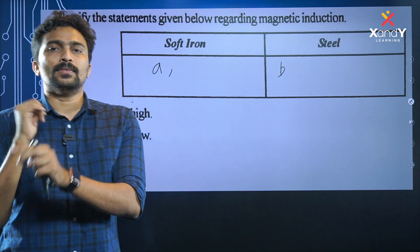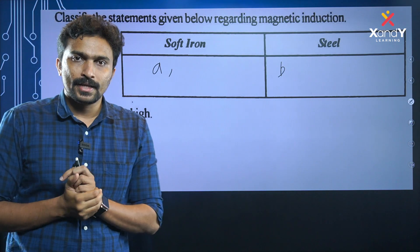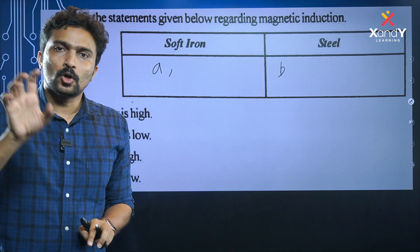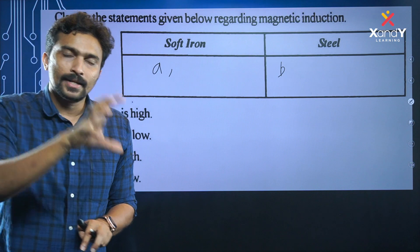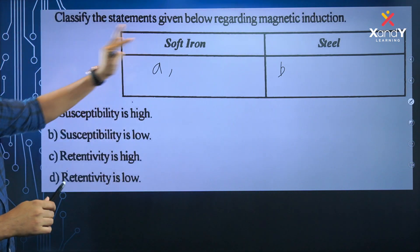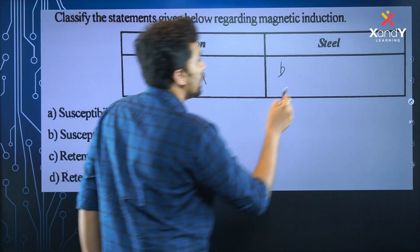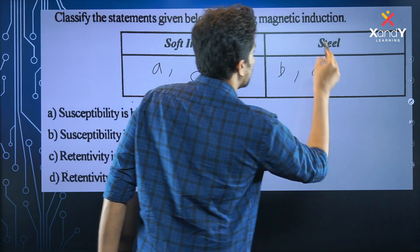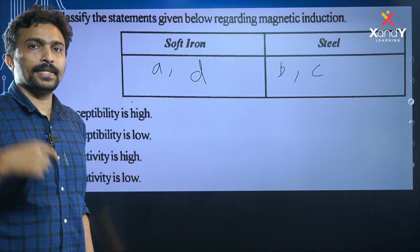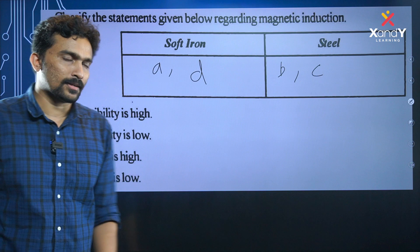How much time does that magnetic field range last? The electromagnetic field range is the same. When we switch the current on and stop, that is the magnetic field range. Retentivity is low — that is soft material. That is D, C, D — that is the magnetic field range.